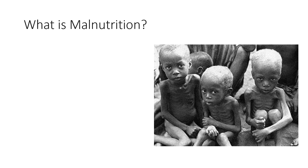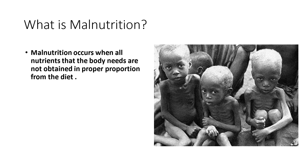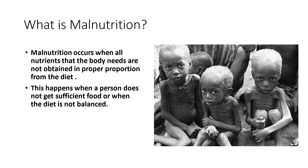So what do you exactly mean by malnutrition? It occurs when all the nutrients that the body needs are not obtained in the proper proportion from the diet. This happens when the person does not get sufficient food or when the diet is not balanced.